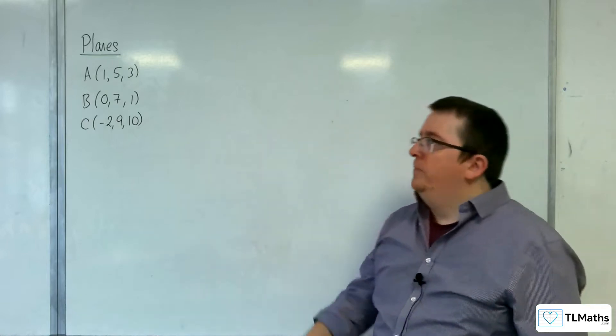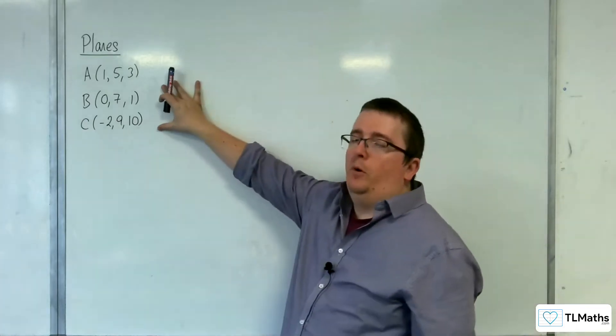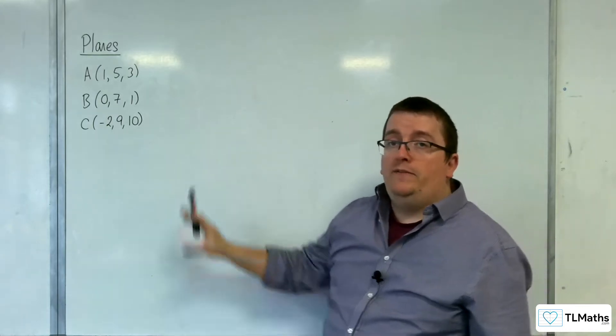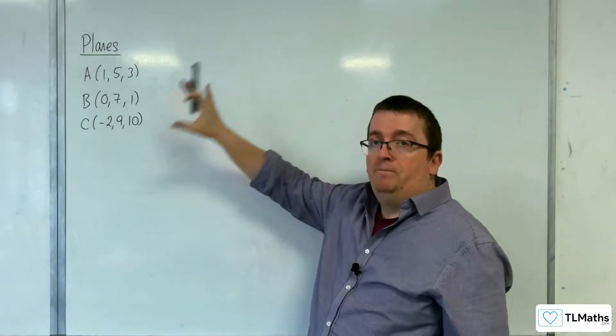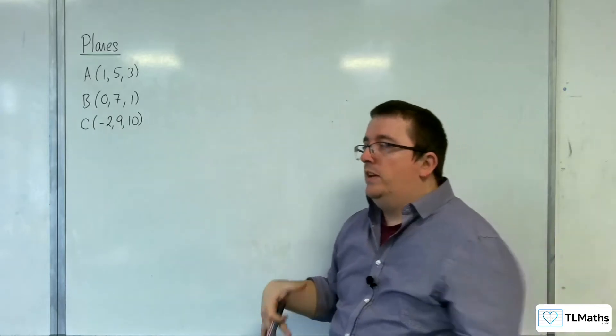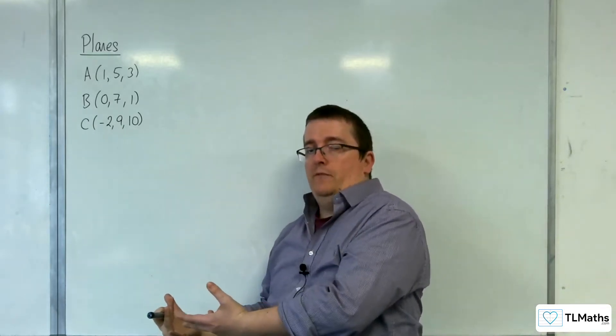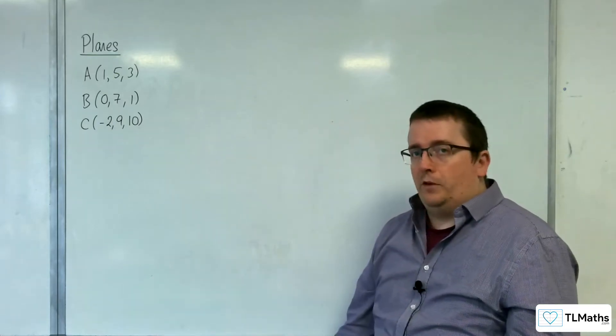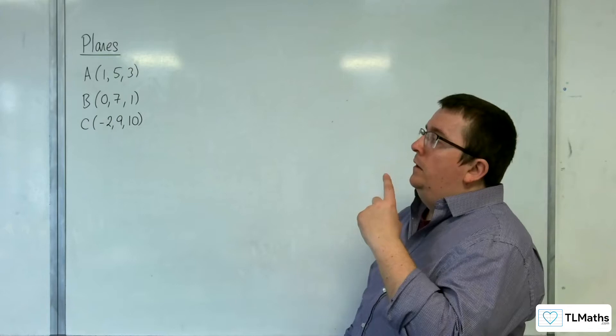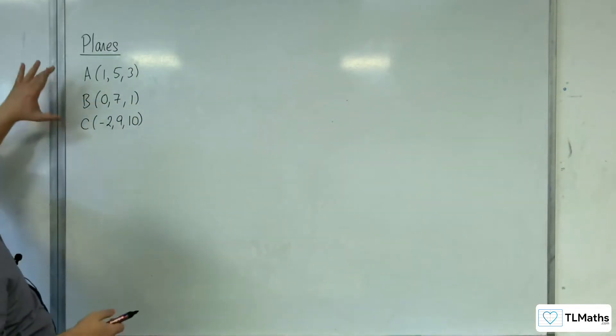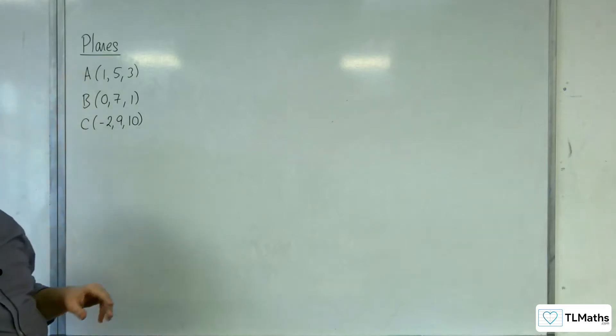In this video, what we're going to do is start off with these three points here, A, B and C. We're going to find the vector equation of the plane that goes through those three points, just like we did in the previous video. Then, we're going to take that vector equation and convert it into Cartesian form. So first of all, let's find the vector equation of the plane going through those three points.